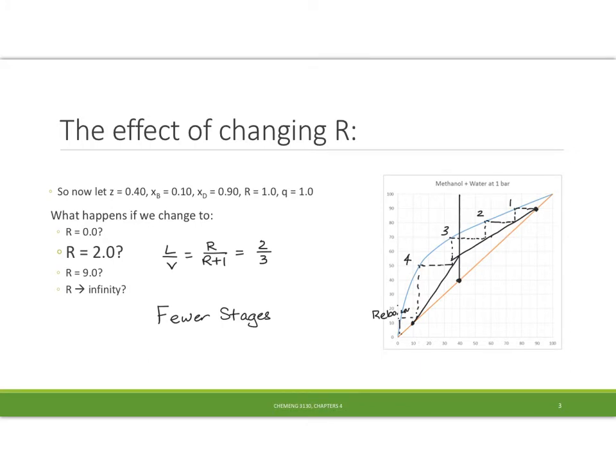When we let r equal 2, l over v is 2 over 3. And so the slope this time, doing a rise over run of 2 over 3, we end up with a graph that looks something like this and I had fewer stages, 4 instead of 5.